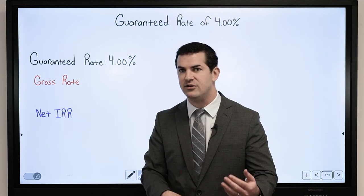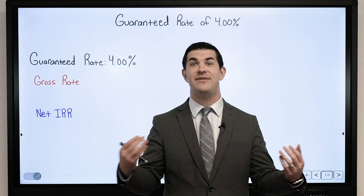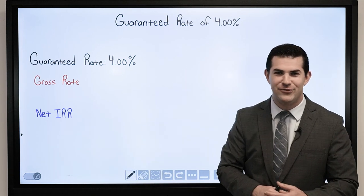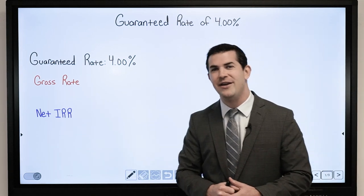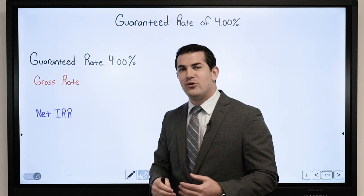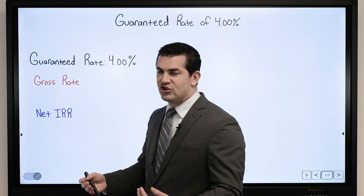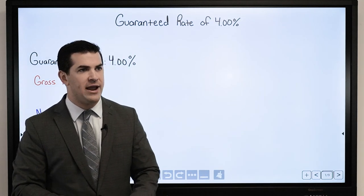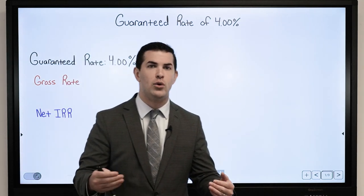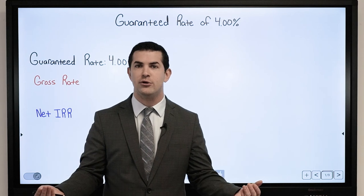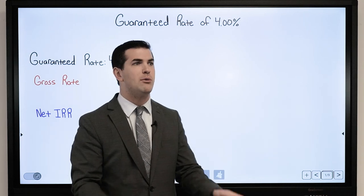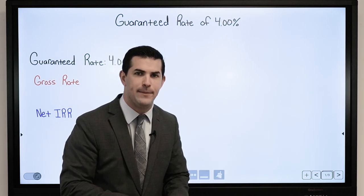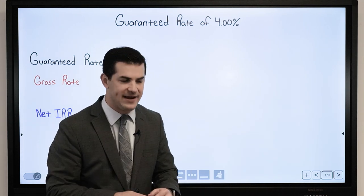Is it 2%? Is it 3%? Is it 5%? You're not going to see that if I have a guaranteed rate of 4%. And then I want to look at my average internal rate of return as well — meaning over a 10, 20, or 30-year span, what was the average growth on that policy's cash value?